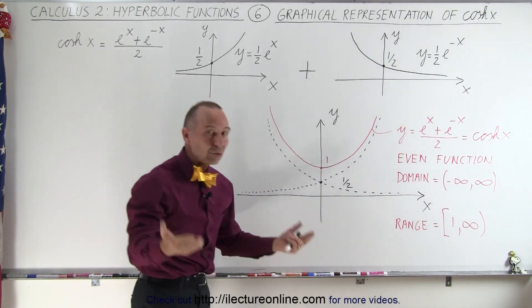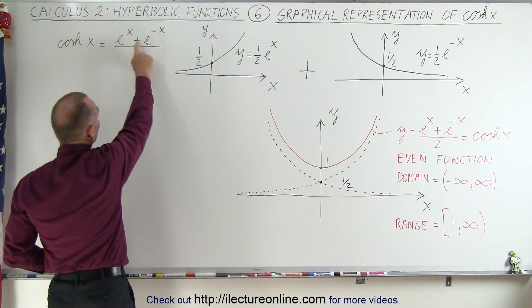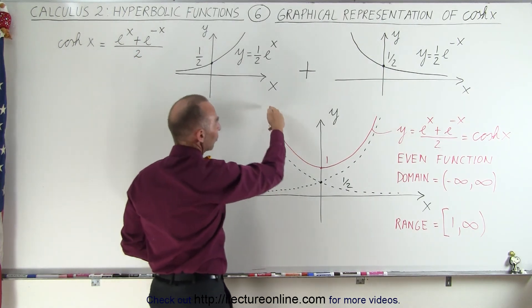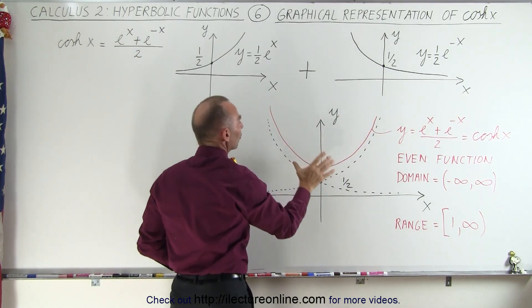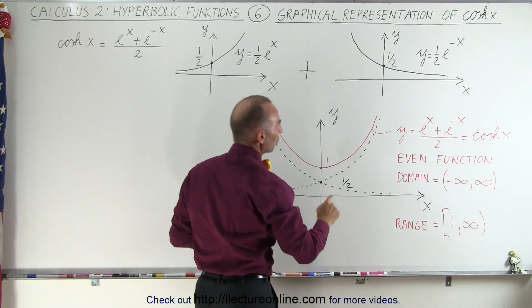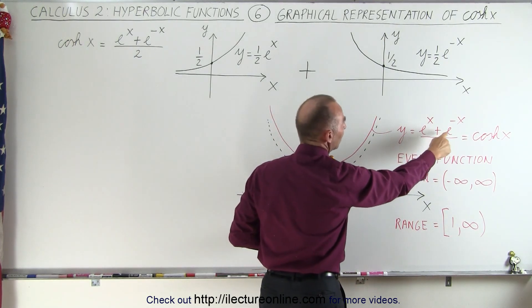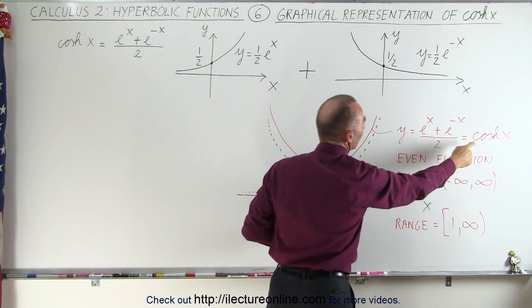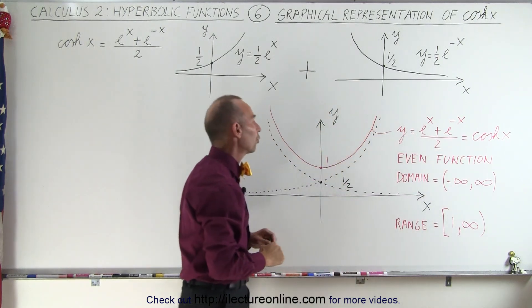And then if we add those two together, after all that's what we do here, then we can see that the red line here represents the sum of those two functions, which represents e to the x plus e to the minus x divided by 2, which is therefore the hyperbolic cosine of x.